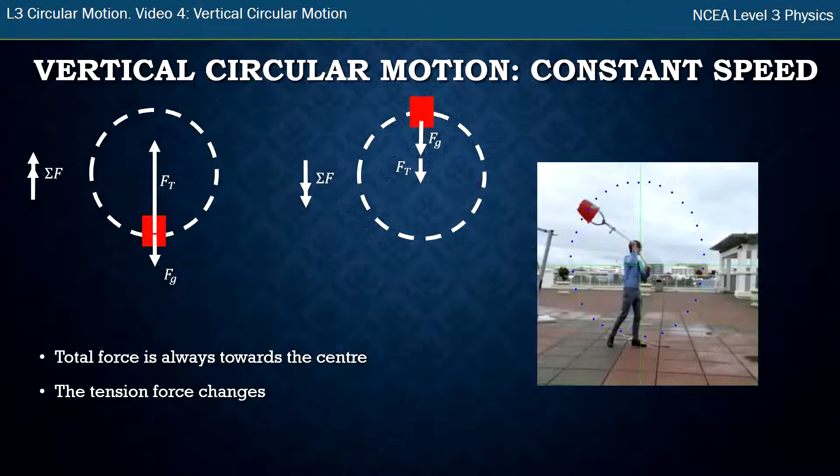What changes in the situation as it goes around is the size of the tension force. Down the bottom you can see it's quite a large tension force pointing upwards and at the top it's quite a small tension force pointing downwards. And so the way that feels differently is the bucket feels heavier to us at the bottom and lighter to us at the top because of that tension force.